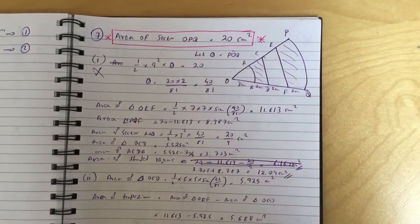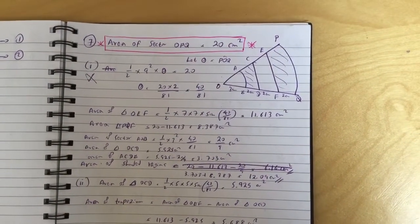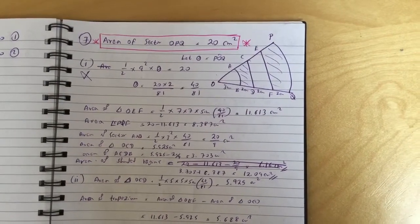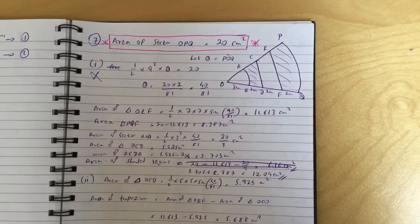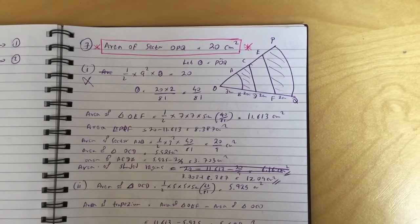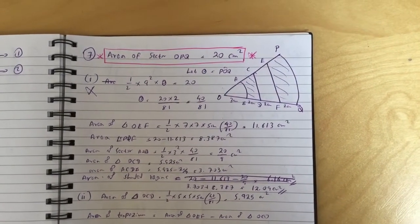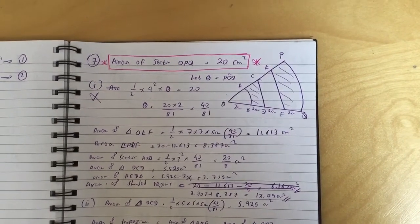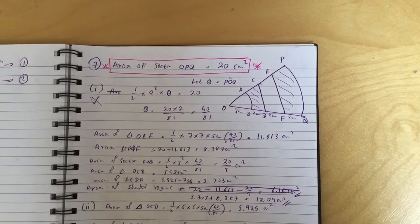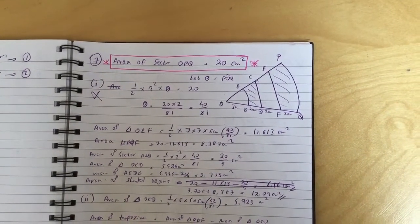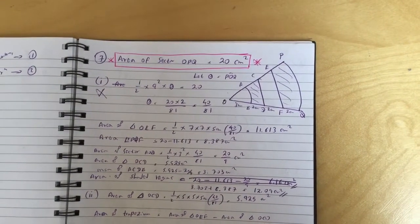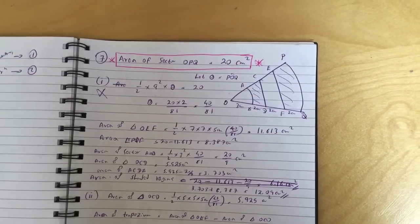So what I did to find these shaded regions, I found the area. First of all, I found theta, which is 40 over 81, and then area of OEF is 11.613. Area of EPQF is, so EPQF is like sort of the section between the main sector and the triangle OEF, and that happens to be 8.387.